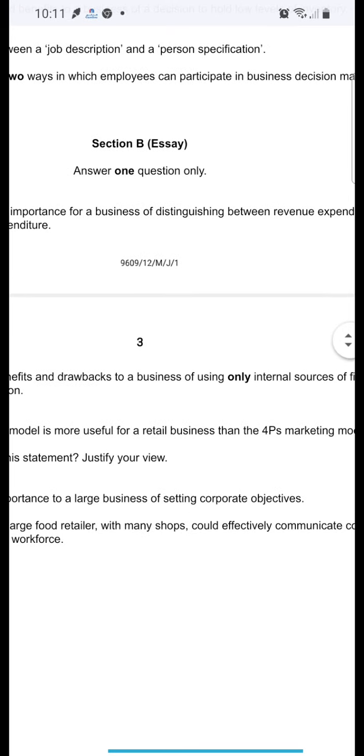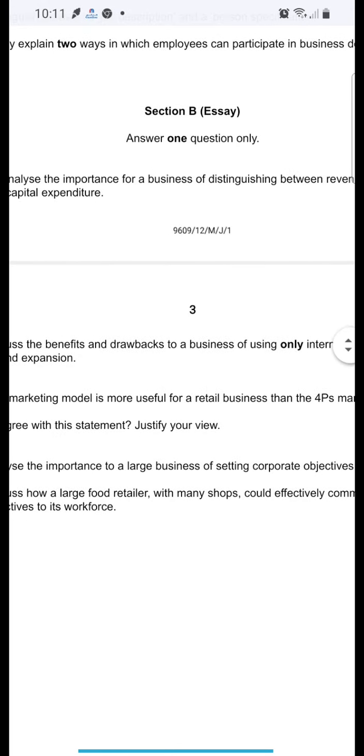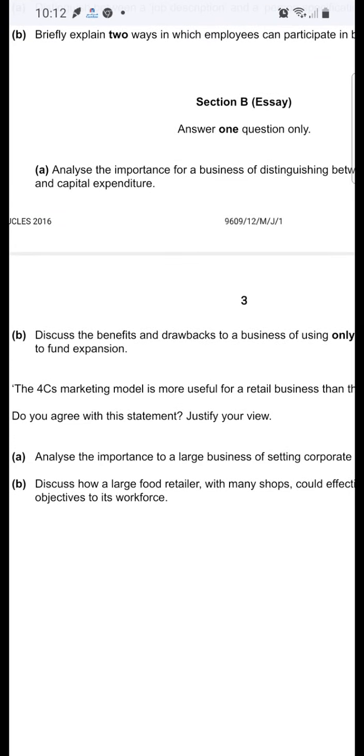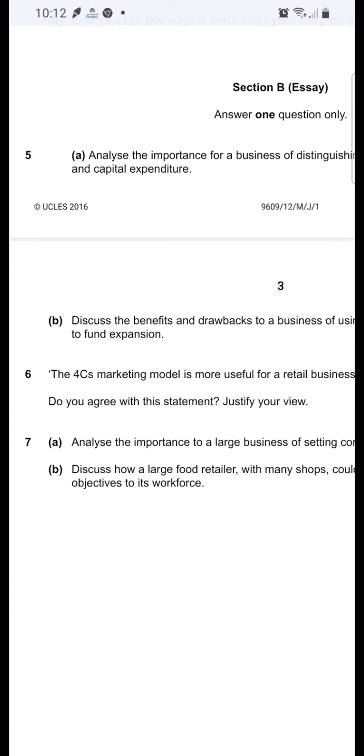Question 6: discuss the benefits and drawbacks of a business using only internal sources of finance. Internal sources of finance include retained earnings, sales of existing assets, and reduction in working capital. Benefits are that you don't have to pay interest rates, it's quickly arranged, and it's a permanent source of finance. The drawbacks are that retained earnings are not high, not in great numbers. If you sell your asset, it cannot be returned back, it's once sold. And if you reduce working capital, that may be a problem for you.